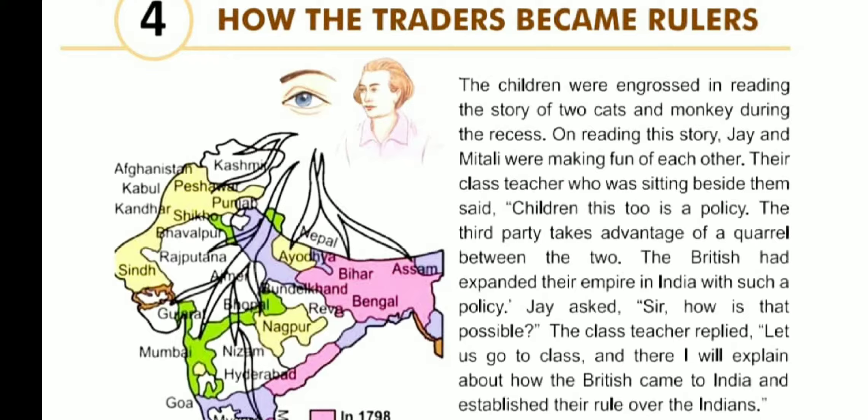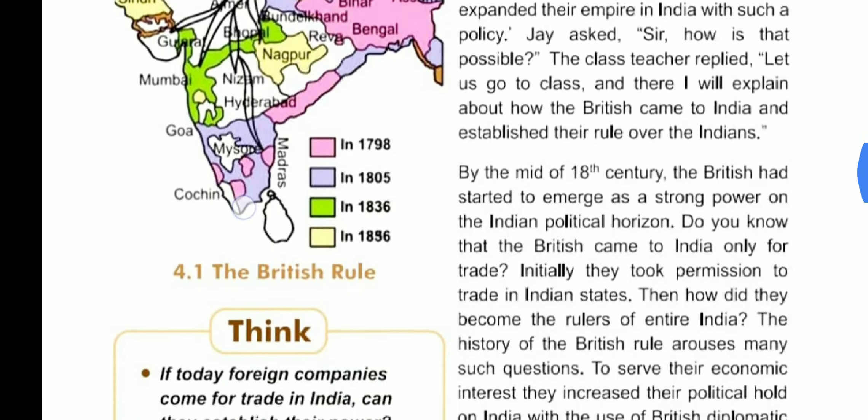The teacher replied, 'Let us go to class and I will explain how the British came to India and established their rule over the Indians.' So basically, the teacher explained how a third party takes advantage of a quarrel between two — meaning when two people are fighting, a third party gains the advantage. The Britishers also expanded their empire in India using such a policy.